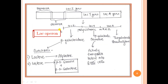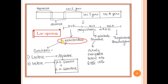This is the structure of the lac operon. As you can see, it consists of the promoter, the operator, and three structural genes: lac Z, lac Y, and lac A. The promoter is the region where RNA polymerase will bind and bring about transcription of these three structural genes, forming a polycistronic mRNA. The lac Z gene on translation will give you beta-galactosidase.